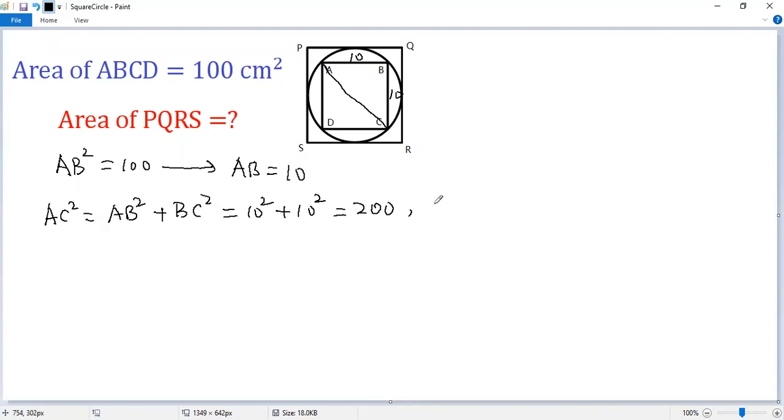Taking square root for both sides, we get AC equals square root of 200, that is 10 times square root of 2. Please note, AC is actually the diameter of the circle.